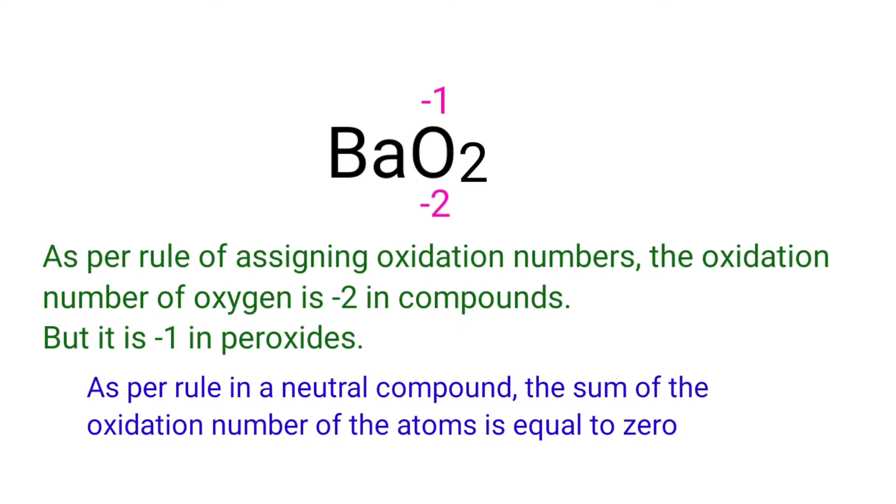As per rule in a neutral compound, the sum of the oxidation number of the atoms is equal to 0. So the numbers on the bottom must add up to 0. So the number under Ba must be plus 2. So we can write the oxidation number of barium as plus 2.